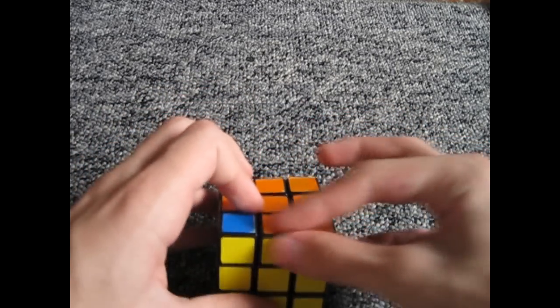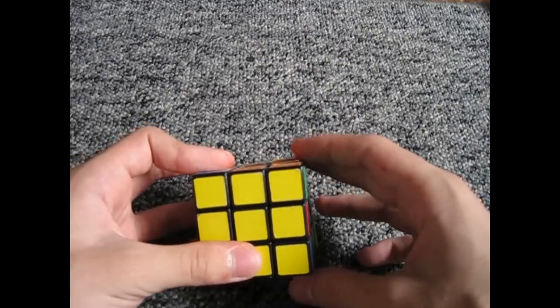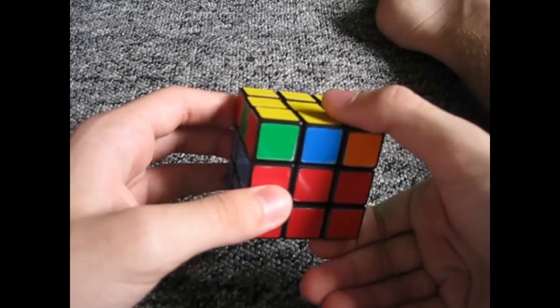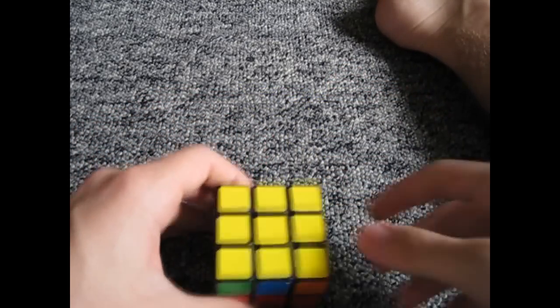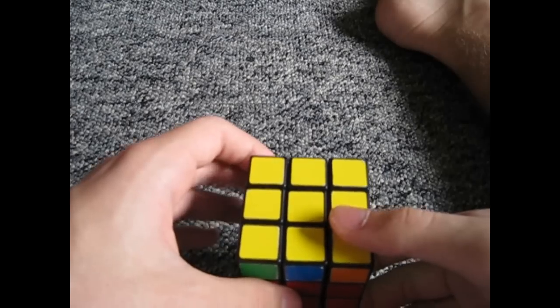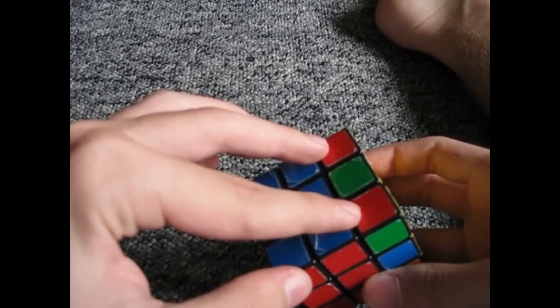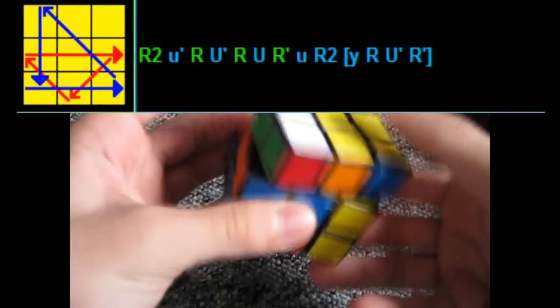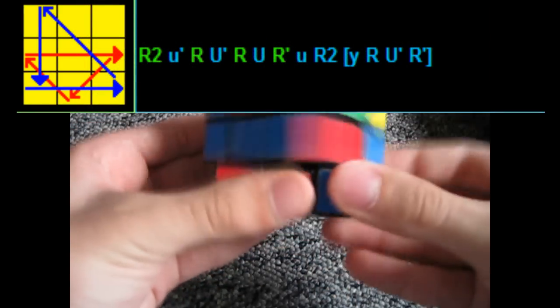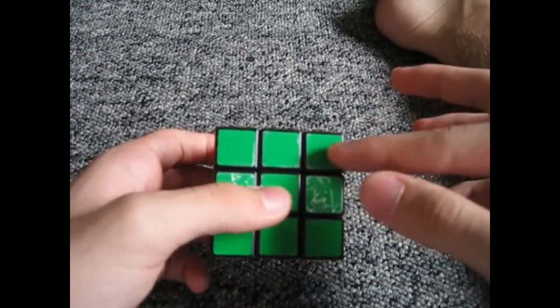So the third one is when you have headlights here and the block here. So then you have to apply this algorithm that has similarities to the first G-perm algorithm. So with the block here and the headlights always on the left side, you apply the algorithm. And that solves the PLL.